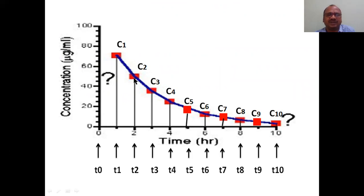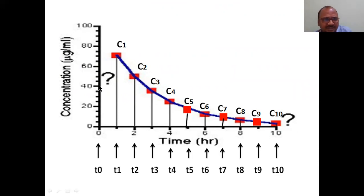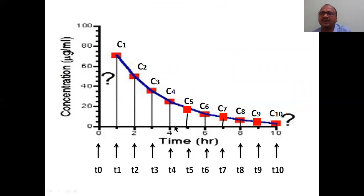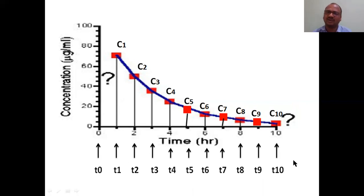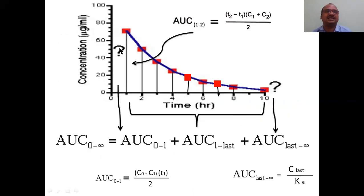Concentration points up to C10 are labeled along the curve. There is also a remaining tail - the last portion - which is a question mark for how to measure. Also, C0 at time zero needs special calculation. The time scale reads T0, T1, T2, T3, T4, T5, T6, T7, T8, T9, T10. The first and last trapezoids are not standard trapezoid shapes and need special formulas.